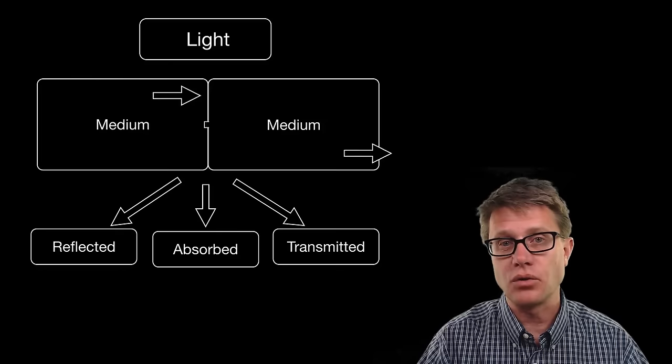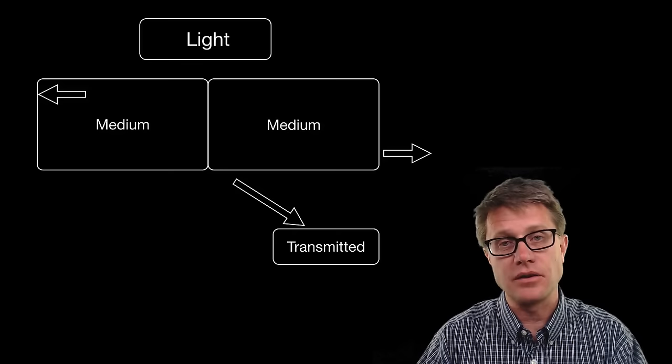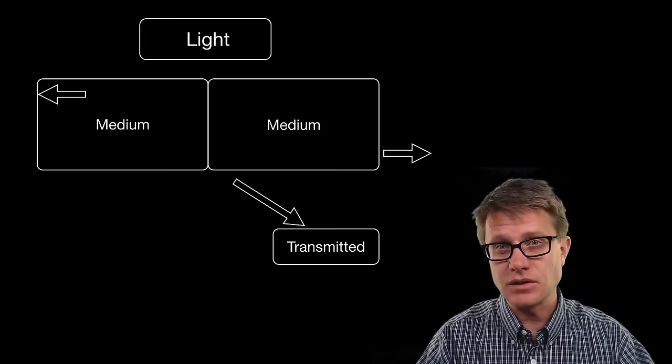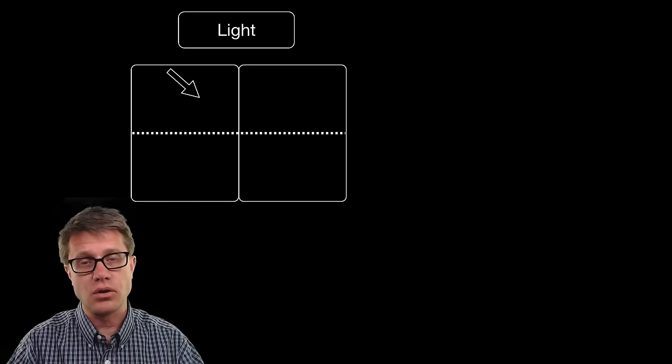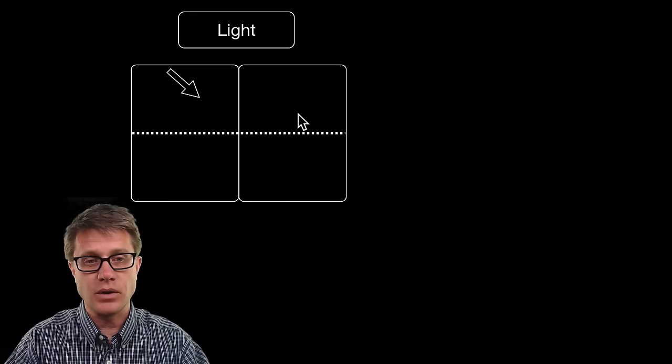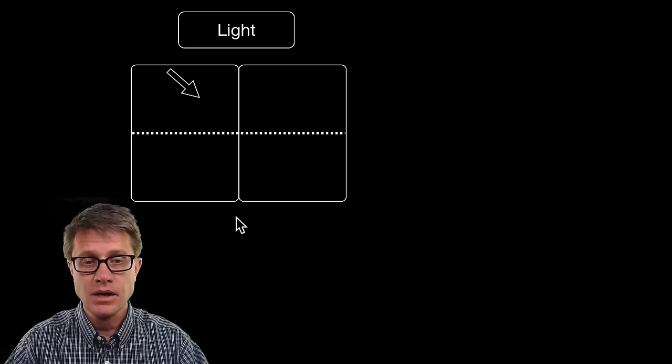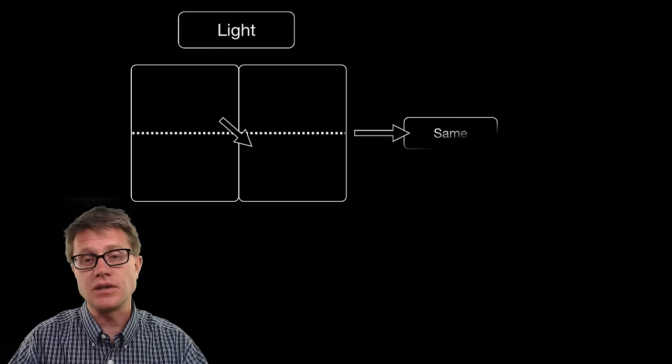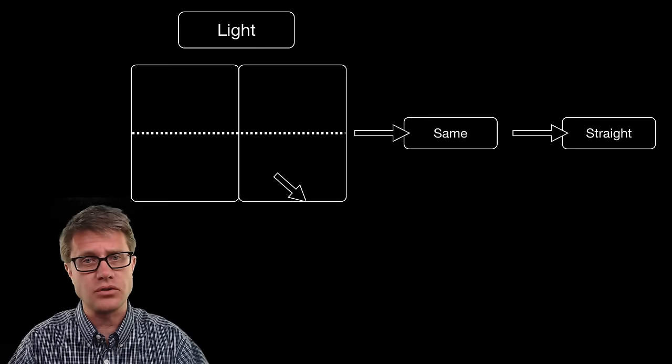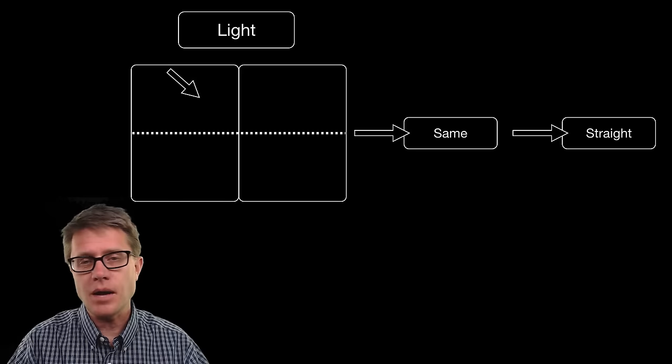When light moves from one medium to another it can be reflected, absorbed, or transmitted. In this video we are dealing with light that is transmitted into that other medium. If the light came in at a straight angle we do not see refraction. If it comes in from one medium into another where it is going at the same exact speed, there is going to be no change in the angle — it is just going to go straight through, just like light goes straight through air because the medium is never changing.